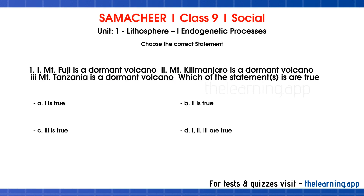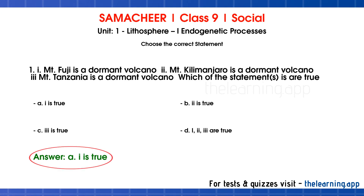Number 1: Mount Fuji is a dormant volcano. Number 2: Mount Kilimanjaro is a dormant volcano. Number 3: Mount Tanzania is a dormant volcano. Which of the following is true? Options are A: 1 is true, B: 2 is true, C: 3 is true, D: 1, 2, 3 are true. The correct answer is option A — 1 is true.